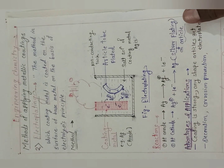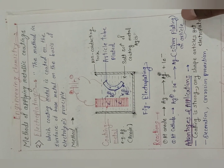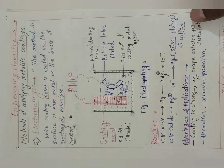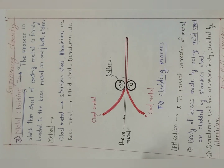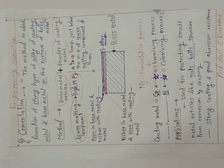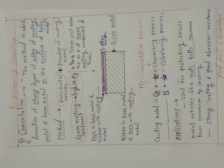Today we studied three methods for applying metallic coatings: electroplating, metal cladding, and cementation. We have successfully completed all the points under the corrosion section. Thank you.